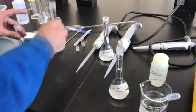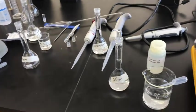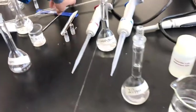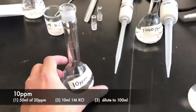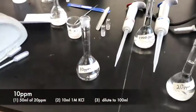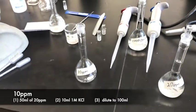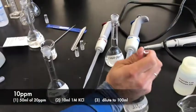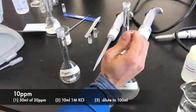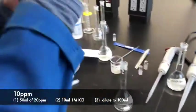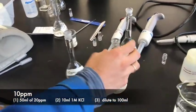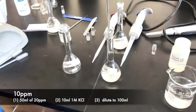This technique is called serial dilution. So from 20 ppm, I can go half by pipetting out 50ml from the 20 ppm. Pipetting that into a 100ml volumetric flask and diluting the rest with water. But again, you should not forget that we have to add 10ml of the 1 molar KCl.